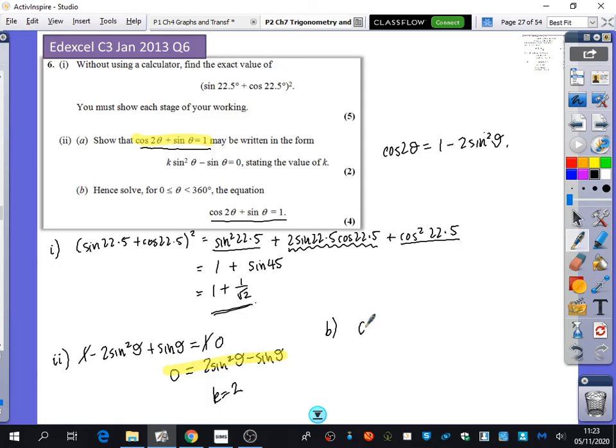I should factorise it. So when I factorise it, I have sine theta times 2 sine theta minus 1, which tells me either sine theta is equal to 0 or sine theta is equal to 1. Why did I say 1? Sine theta is equal to a half.